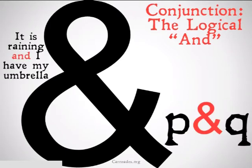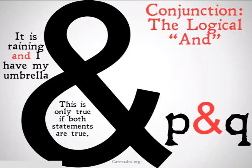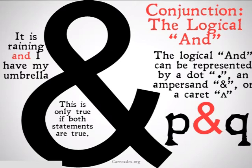What this means is: it is raining and I have my umbrella — if P represents 'it's raining' and Q represents 'I have my umbrella.' This statement is only true if both of those individual statements, P and Q, are true themselves.